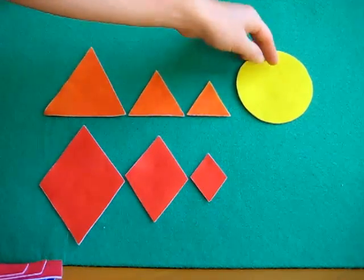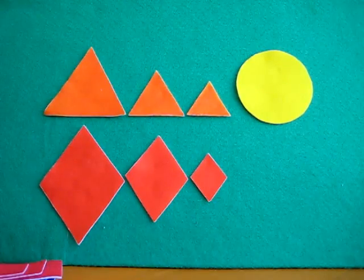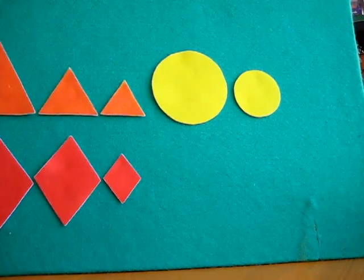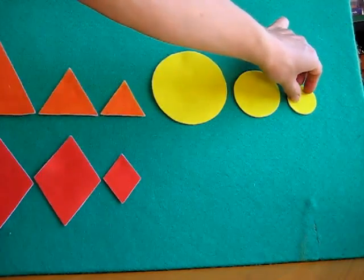We have here circles, a big yellow circle. We have here a smaller yellow circle, and here's the smallest yellow circle.